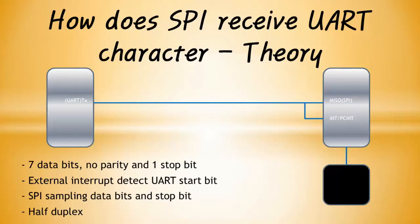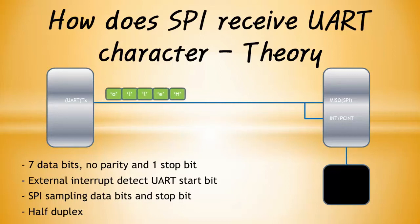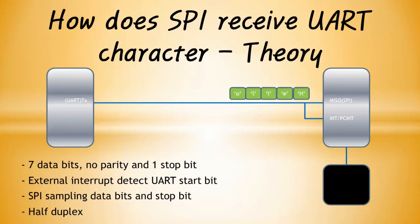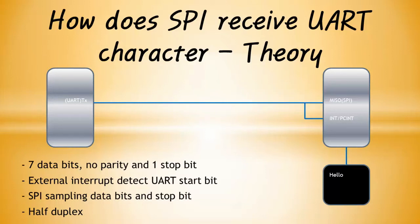This video theoretically explains how the signal from the UART can be received by the SPI. Wiring and software for bi-directional communication between SPI and UART are described in a following video. SPI and UART bi-directional communication supports only half-duplex due to SPI characteristics. Use an external interrupt or pin change interrupt to detect the start bit.